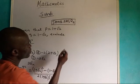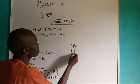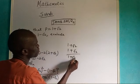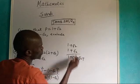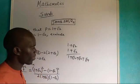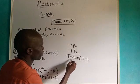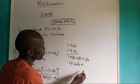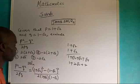We want to expand P squared first. This one is 1 plus root 2, multiplied by 1 plus root 2. Expanding: 1 times 1 is 1, 1 times root 2 is root 2, 1 times root 2 is root 2, and root 2 times root 2 will give root 4. It is a perfect square.